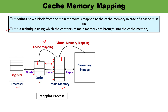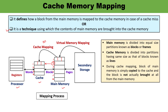What happens if the CPU requires any data or instruction that is not available in the cache? That data is taken from the main memory and again copied into the cache. You must remember that the data available in the cache is a duplicated copy — block number 2 is not actually removed from the main memory. There are various techniques for how a block of main memory is going to be copied into the cache.